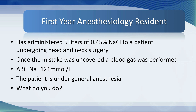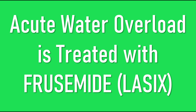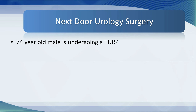You are called to the operating room. There is a first-year anesthesia resident who has administered five liters of 0.45% saline — that's hypotonic saline solution — to a patient undergoing head and neck surgery. Once the mistake was uncovered, a blood gas was performed and the sodium was 121 millimoles per litre. The patient is under general anesthesia. In the situation of acute water overload, the treatment is furosemide or other loop diuretics. You just need to diurese off the liquid and not be too worried about alternative consequences.